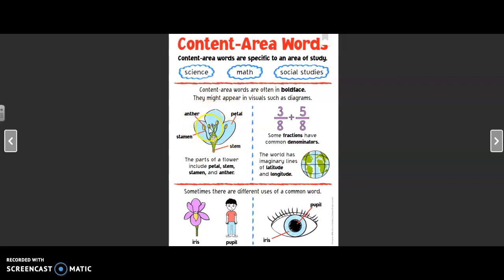So here we have an example of a diagram and there's anther and it shows you what that is, what part of the plant. That is stamen, petal, and stem. The parts of a flower include petal, stem, stamen, and anther. That's how you might see it with the bold face. Over here we've got some math words, some fractions have common denominators.